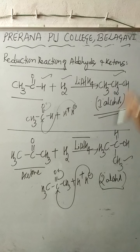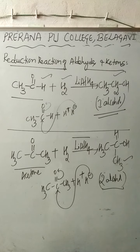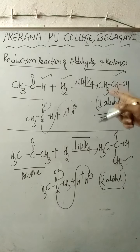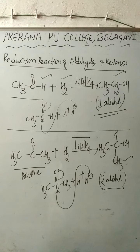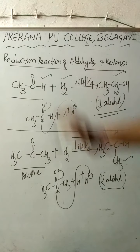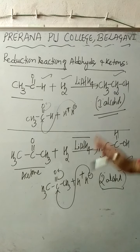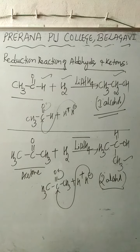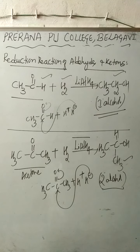These reactions were already discussed in the chapter on alcohols, phenols and ethers — but in the reverse form, that is, dehydrogenation. From a primary alcohol, eliminating hydrogen gives an aldehyde; from a secondary alcohol, eliminating hydrogen gives a ketone, when the compound is heated at 300°C in the presence of copper.